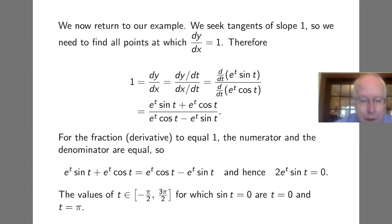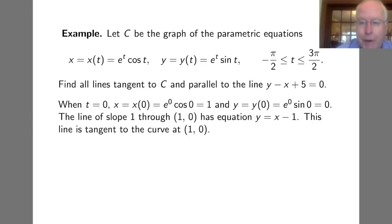For values of t in the interval -π/2 to 3π/2, the sine of t is 0 when t equals 0 and t equals π. Now that we know the t values for these places where the derivative is 1, we can go back to the parametric equations and figure out what the x, y coordinates of these points are. We've just restated the problem to remind us what we're doing. We're now going to analyze the two t values we found.